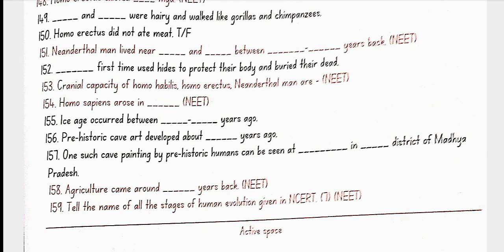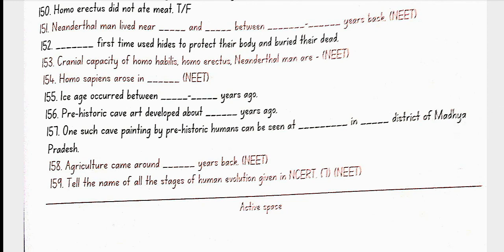Homo sapiens arose in Africa. Ice age occurred between 75,000 to 10,000 years ago. Prehistoric cave art developed about 18,000 years ago. One such cave painting by prehistoric humans can be seen at Bhimbetka rock shelter in Raisen district of Madhya Pradesh. Agriculture came around 10,000 years back. All the stages of human evolution were Dryopithecus, Ramapithecus, Australopithecus, Homo habilis, Homo erectus, Neanderthal man and Homo sapiens.